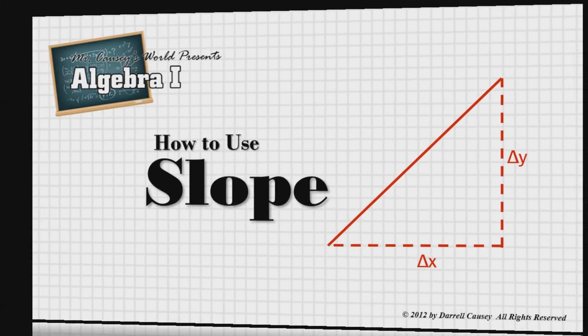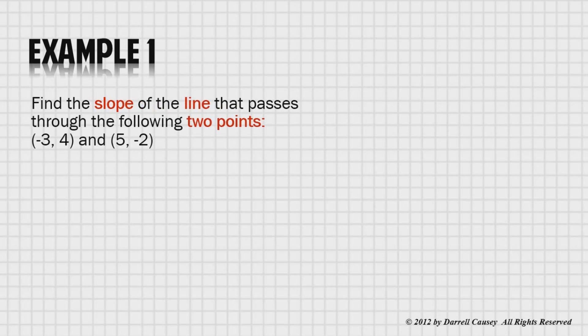Alright, let's look at how to use slope and do a couple of examples. Example 1. Find the slope of the line that passes through the following two points, negative 3, 4, and 5, negative 2. First, write out the slope formula for the two points. Next, fill in the coordinates, and the answer is negative 3 fourths.